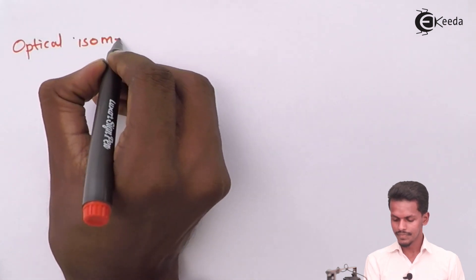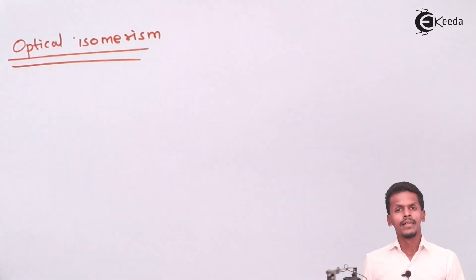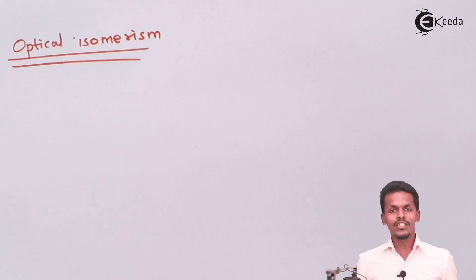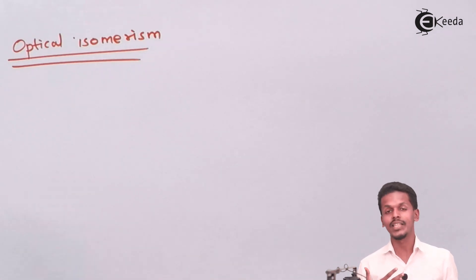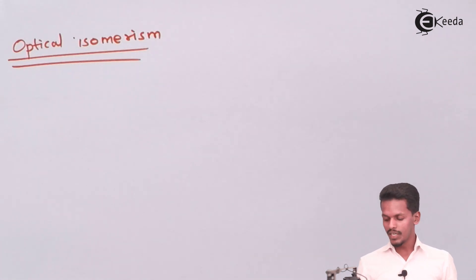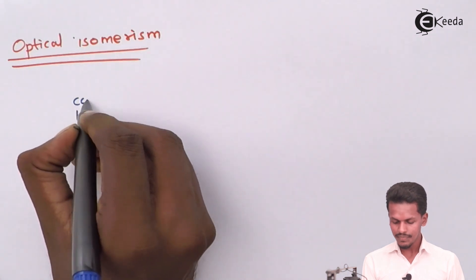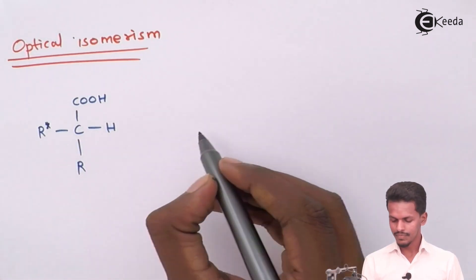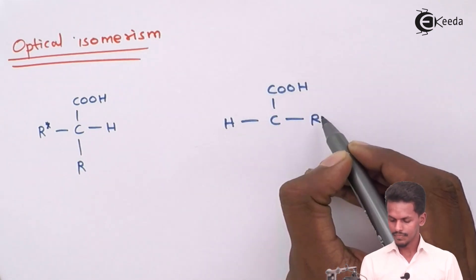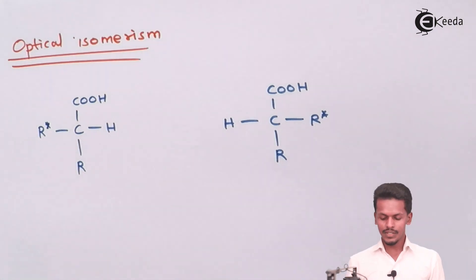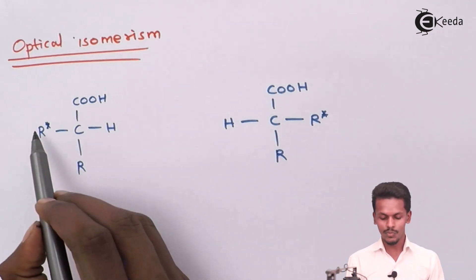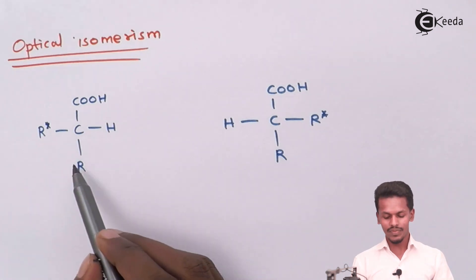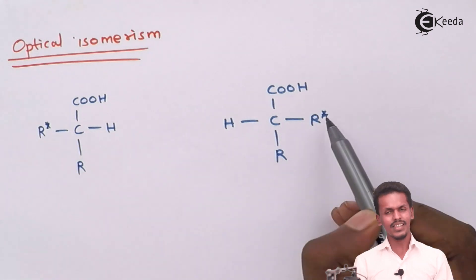The last type is optical isomers. Optical isomers are shown by molecules that have optical activity — the tendency to rotate plane polarized light when it is passed through the molecule. Representing two molecules with the same molecular formula, if we consider a carbon atom where all four groups attached to it are different from each other, that carbon is called a chiral carbon, marked with an asterisk.